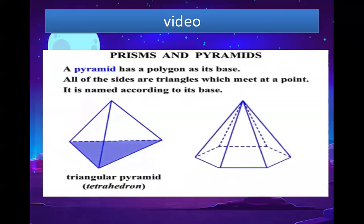This pyramid — what has it got as its base? One, two, three, four, five, six — six sides. It's a hexagon, so it's known as a hexagonal pyramid. Excellent, that concludes the lesson. Good luck with your questions.